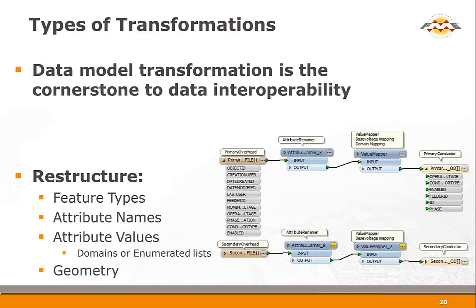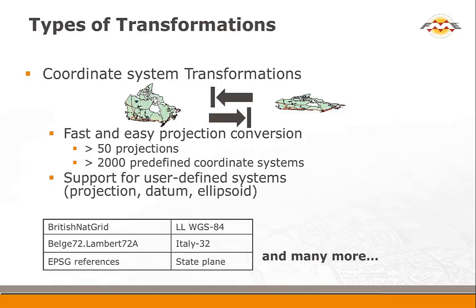Interestingly, although we're quite focused on spatial data, the most common tools that people use in FME are the non-spatial tools — testing, filtering, renaming attributes — those very fundamental data schema transformation tools. The geometry in many cases just comes along for the ride from source to destination.